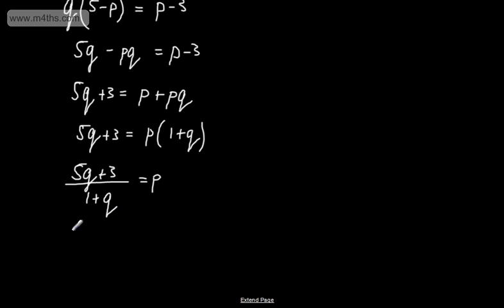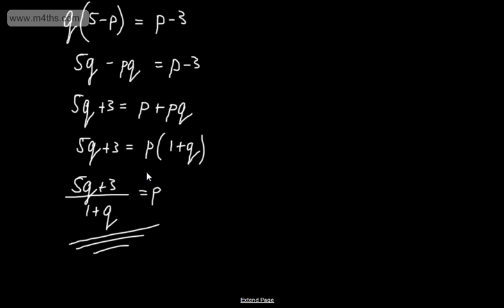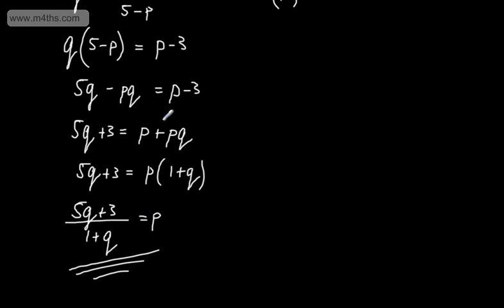So we've made p the subject. The steps were: multiply through, expand the bracket, collect like terms, refactor, and then divide through. At this stage we should spot that p is a common factor, and we've just divided through.